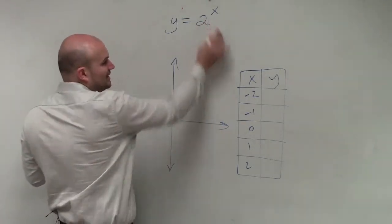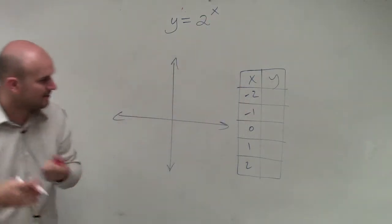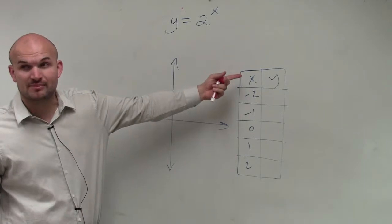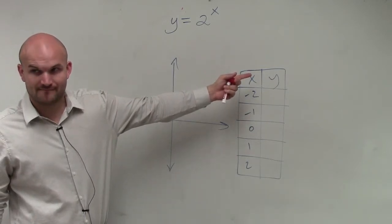So all we're simply going to do is plug in each of these values in for x. Now, I think it's easiest to first use the positive numbers, and then we'll get to our negative numbers.